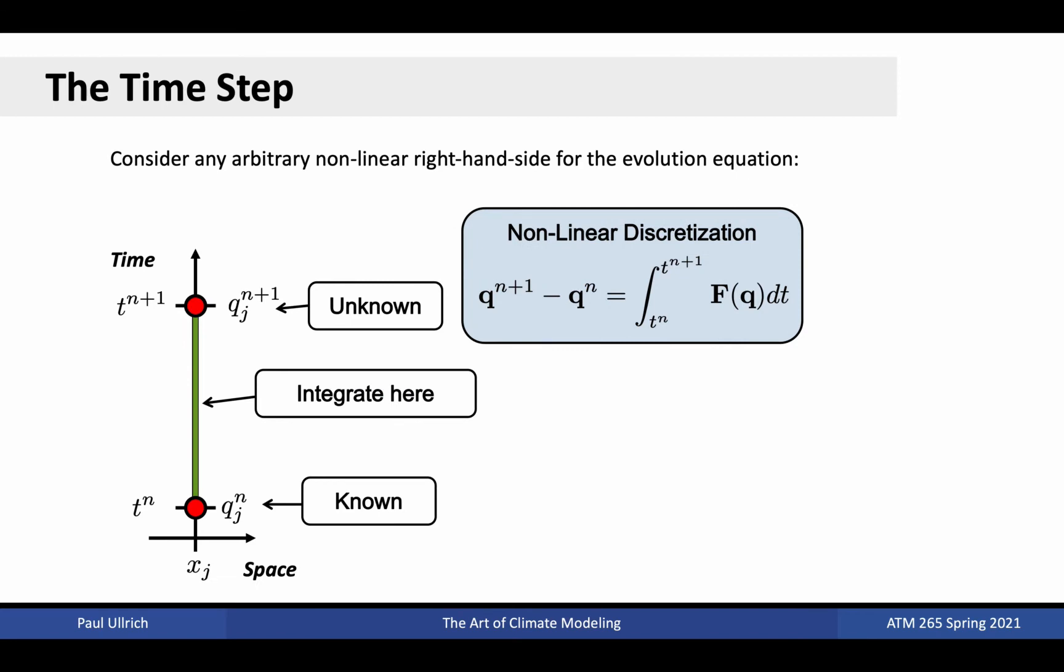In order to visualize these solutions, consider a 2D plot with space along the horizontal axis and time along the vertical axis. We are discrete in both space and time, meaning information is known only at select points. We do know the state at the initial time, which we denote with superscript n. The initial time is tn and the final time is tn plus 1. The initial state at point x sub j is denoted qjn and the final state is denoted qjn plus 1. To update the state, we need to calculate the integral of the right-hand side along the green line shown in this figure.